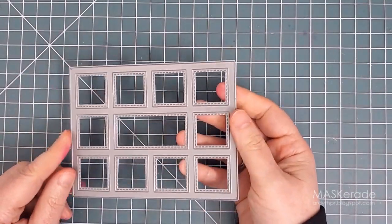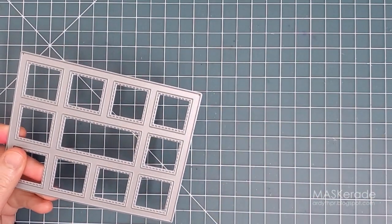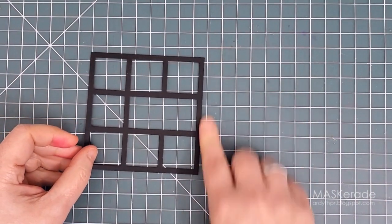For my card I'm going to use both these sets of lights so I have six lights in total. I'm going to make a light up dance floor with this cover plate die from MFT Stamps. I love it because you can easily trim it down to be a square.